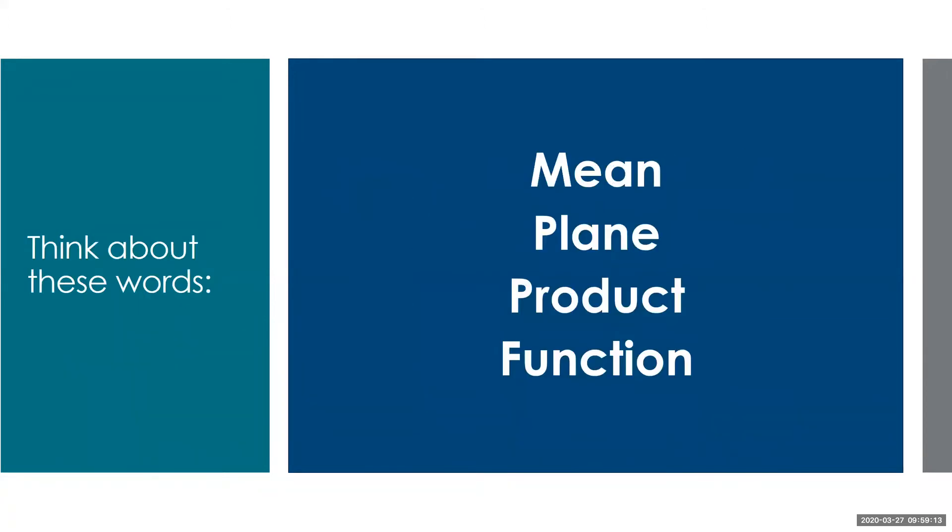So think about these words when we think about mathematics as a language. Think about the word mean. That has several definitions. It could indicate or suggest something. It could refer to the fact that someone is behaving in an unkind way. Or when we think about mathematics, it could be the statistical average.